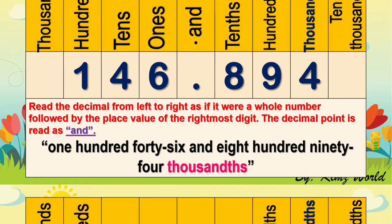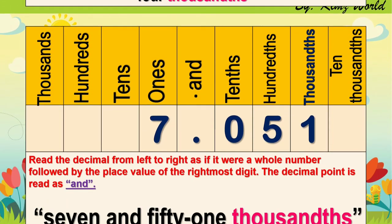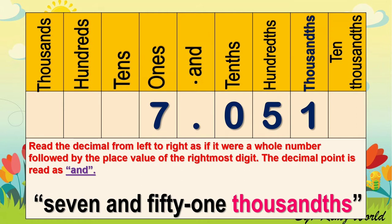More examples. So we have 7 and, as you can see the number on the decimal places is 51. So, 7 and 51, then say the place value of the rightmost digit, which is 1. The place value of digit 1 is thousandths. So we read this number as 7 and 51 thousandths.